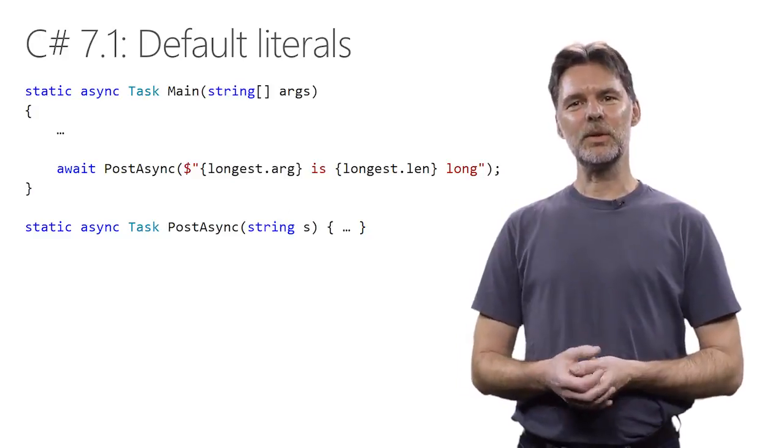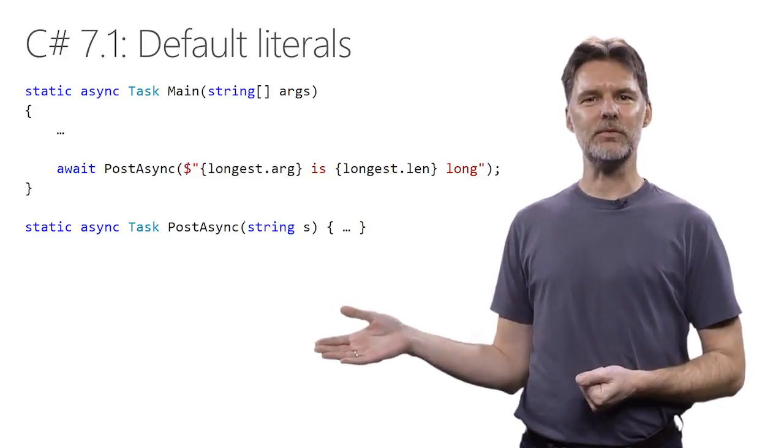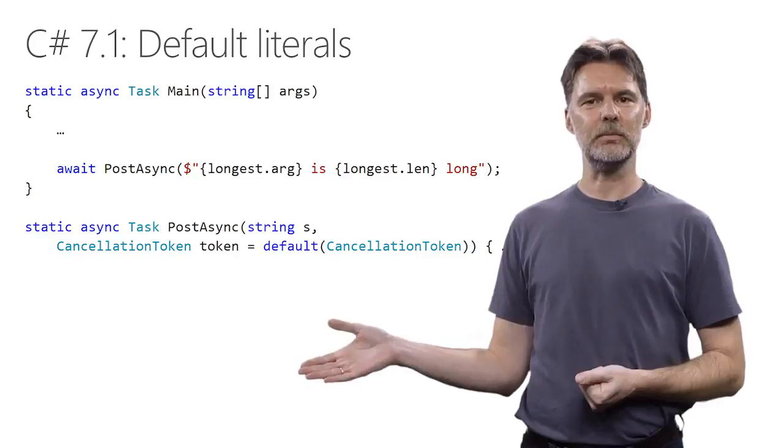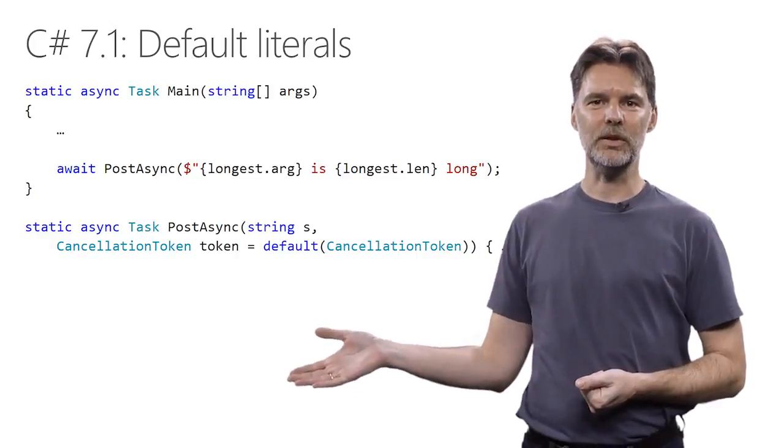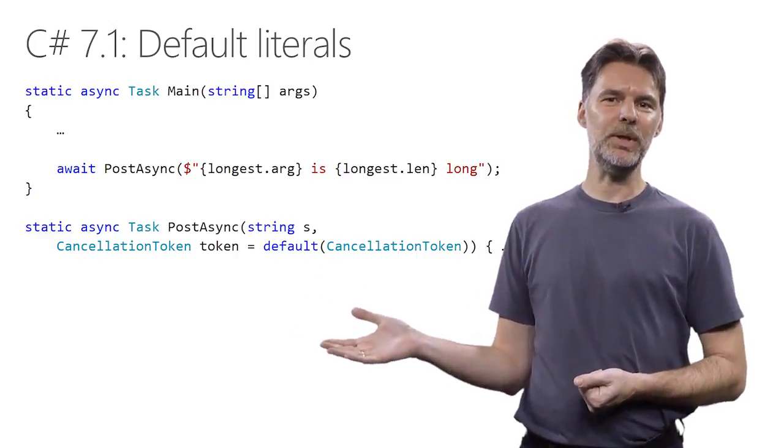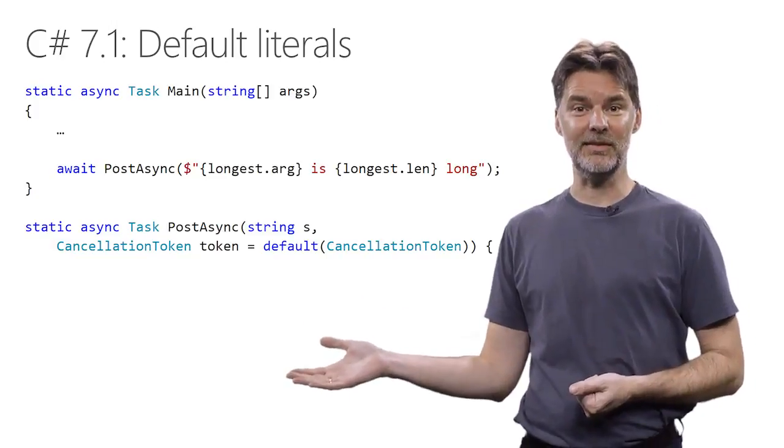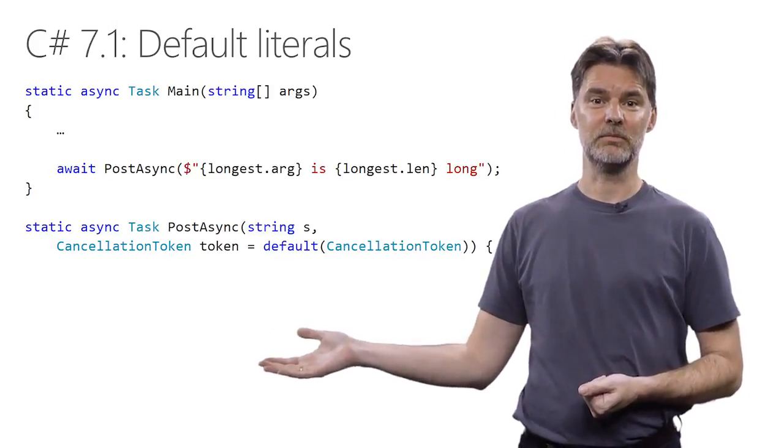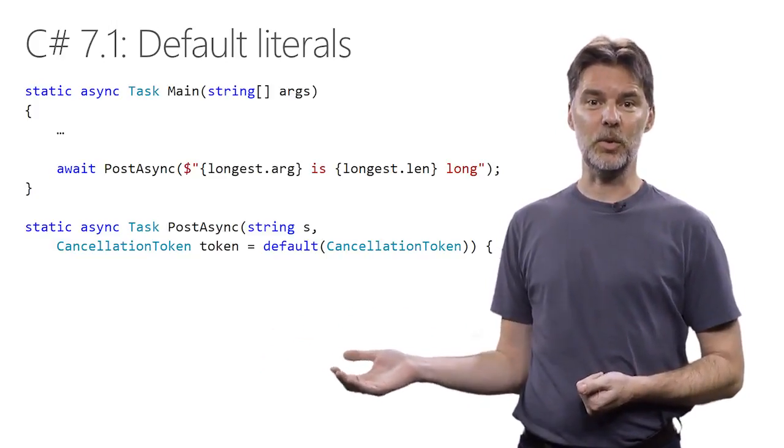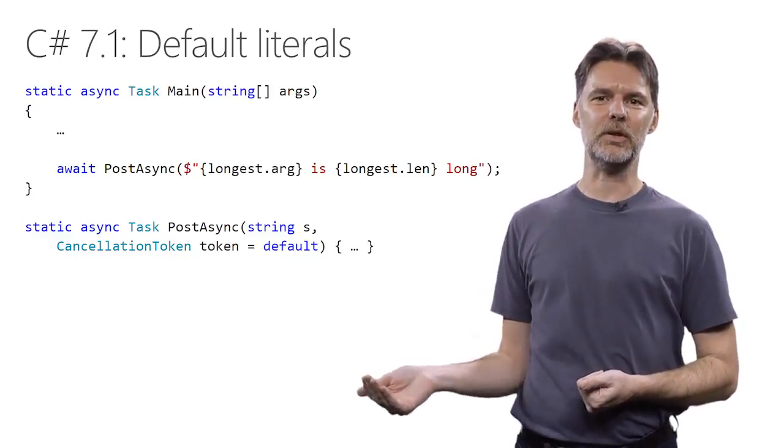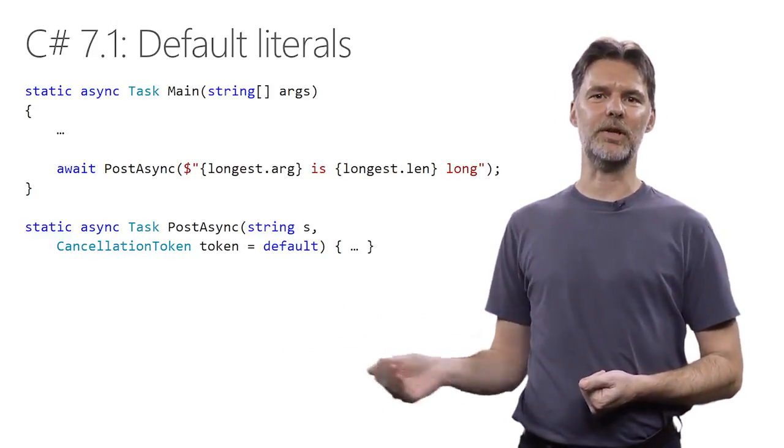Finally, let's have a look at that post async method. It really should have an optional cancellation token parameter. Again, there's redundancy. The default expression repeats a type, a long one in this case, that should be clear from context. And in C# 7.1, it is. The language lets you omit the type in the default expression when it's given by the context.